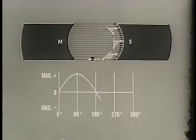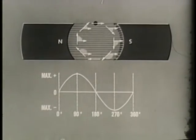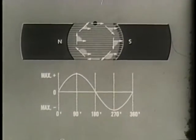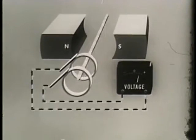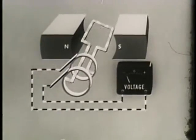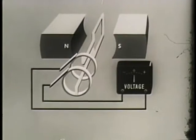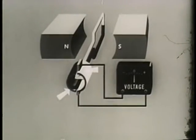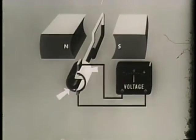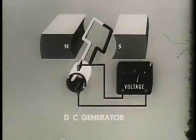A graph of EMF versus conductor position during one revolution will be a sine wave representing alternating current or AC. All rotary generators produce AC internally. What you have seen so far is really the theory and operation of a basic AC generator. But our purpose was to explain the principles of operation of a DC generator. To get direct current, we will attach each end of the conductor to a segment of copper forming a commutator. Now our machine is a DC generator.